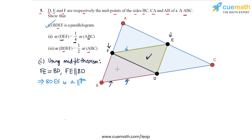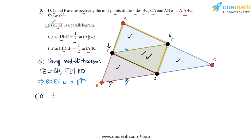So the green triangle DEF is congruent to the red triangle FBD. But similarly, just like we proved that BDEF is a parallelogram, we can also prove that AFDE is a parallelogram. This would mean that DEF is also congruent to AFE. And similarly, we could also prove that DEF is congruent to EDC. So basically, all four triangles that form the large triangle are congruent to each other.